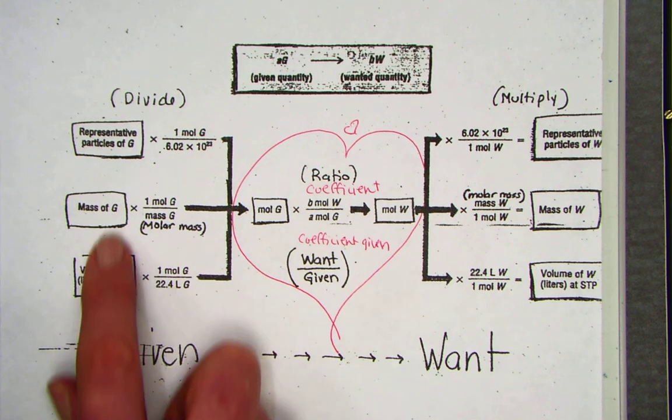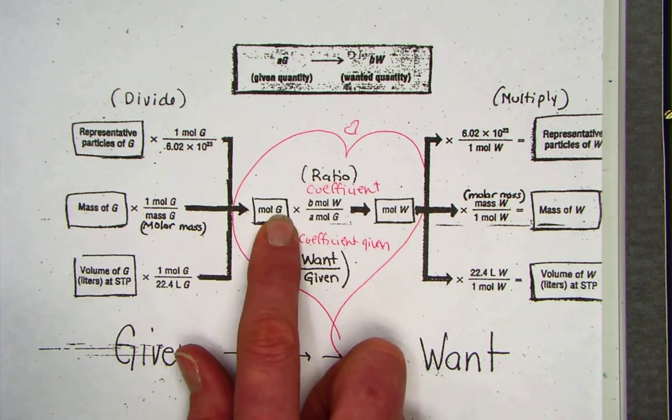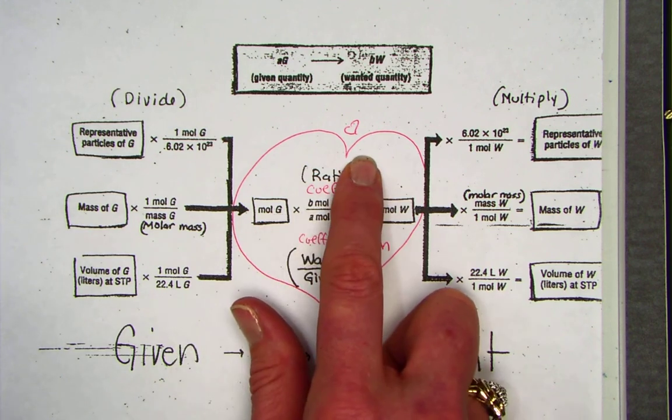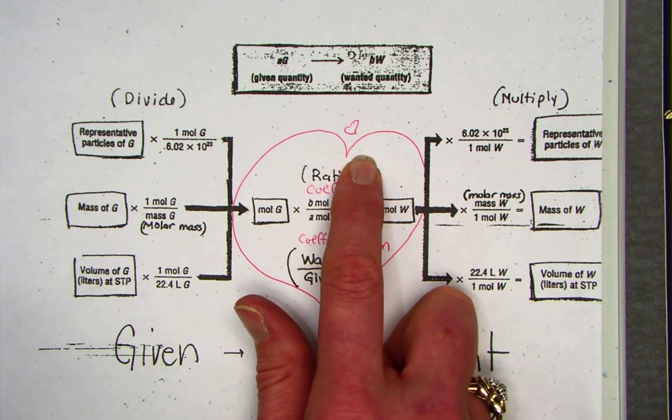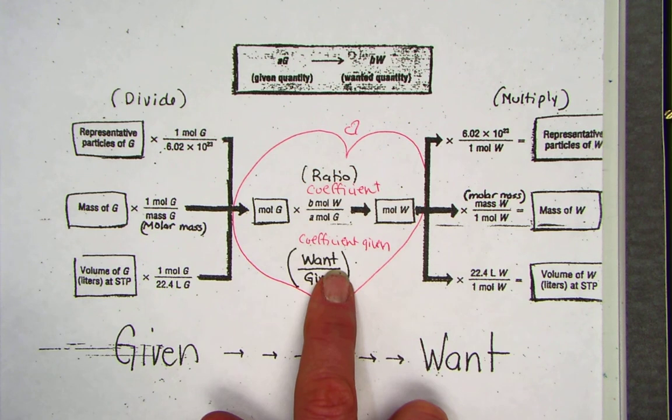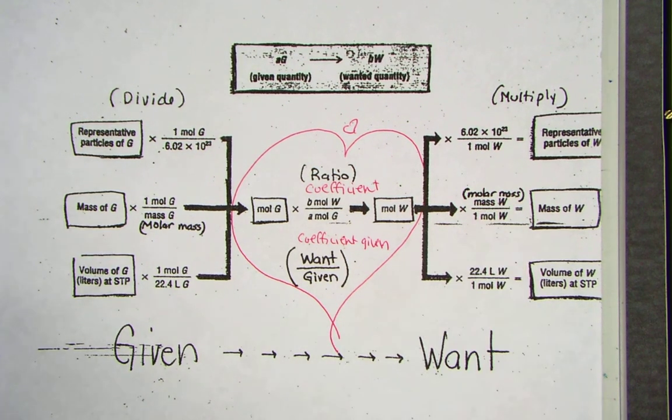Counting, weighing, or taking a volume, all roads lead into the mole. Knowing that any good stoichiometry problem has the heart of want over given, and heading back out to the desired unit.